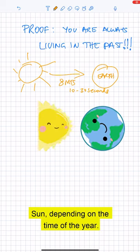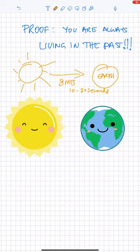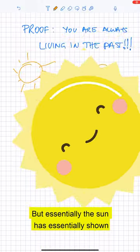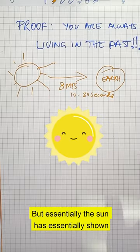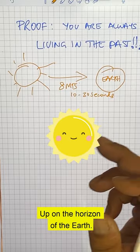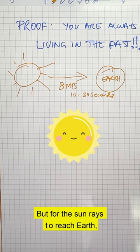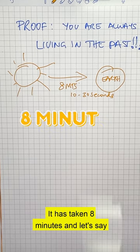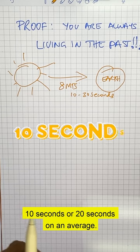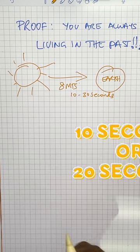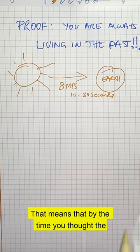Depending on the time of the year, but essentially the sun has essentially shown up on the horizon of the earth. But for the sun rays to reach earth it has taken eight minutes and let's say 10 seconds or 20 seconds on an average. That means that by the time you thought the sun rose, if you saw that.